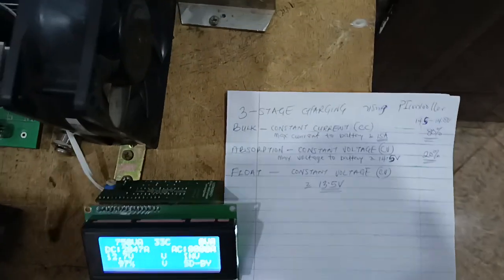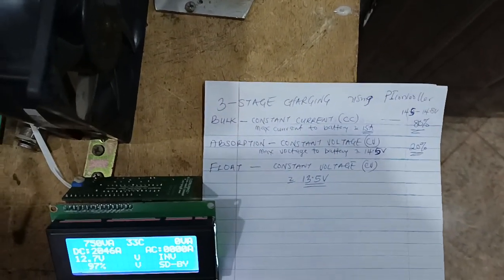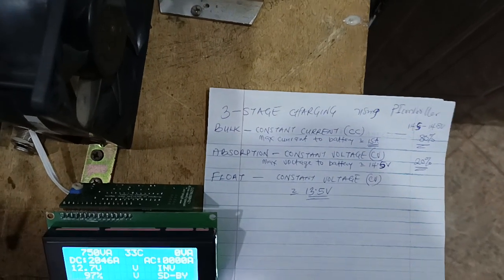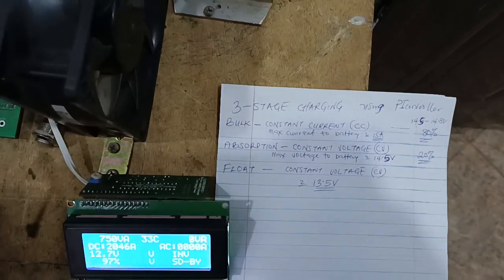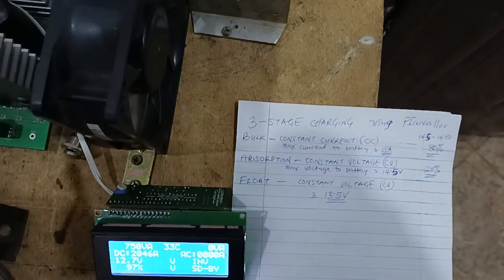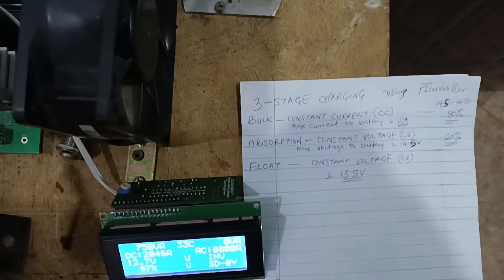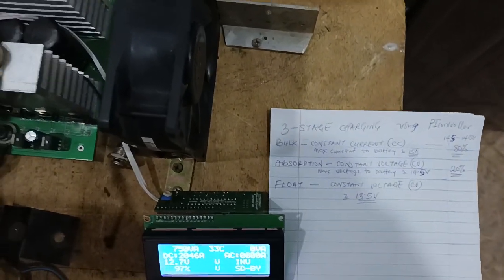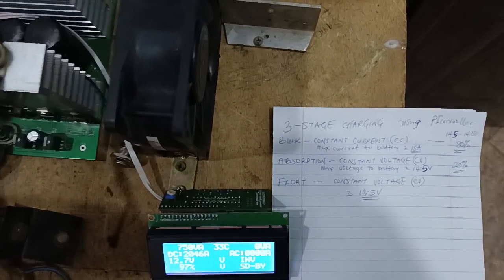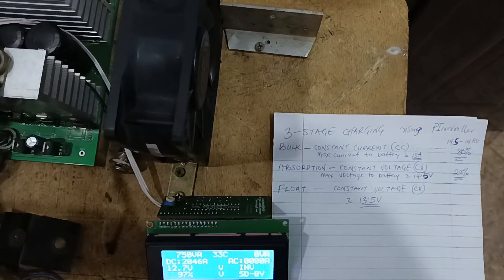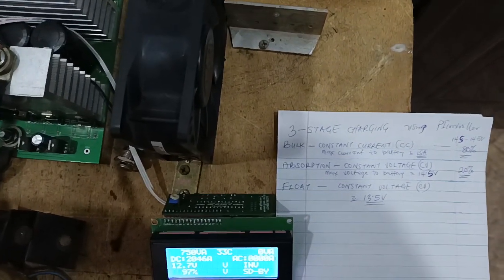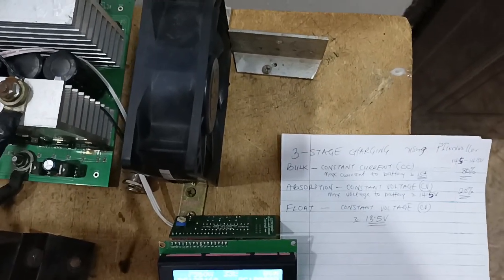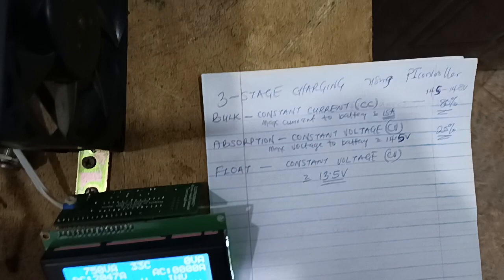The way they charge is a three-stage charging process. We get bulk charging, we get absorption charging, and float. But for this video, it will be difficult to do one long video to show all three processes. So for today, we will just do a video on the first stage, which is called the bulk.